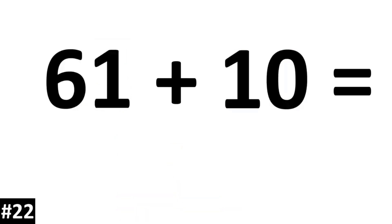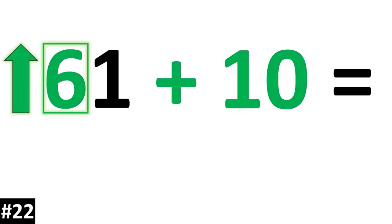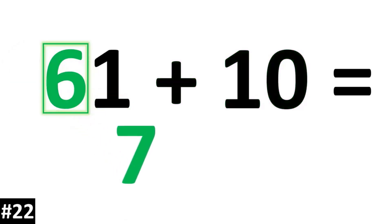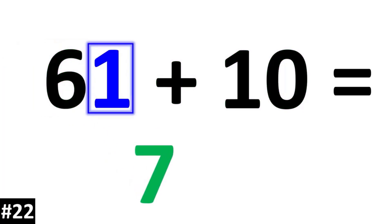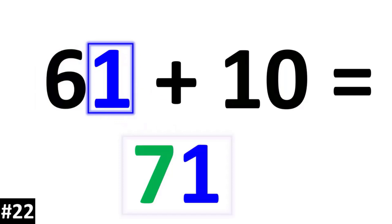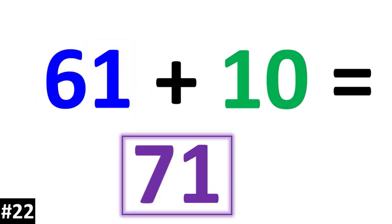61 plus 10: the tens digit of 6 is going to become a 7. The ones digit of 1 stays the same. So we have 71.